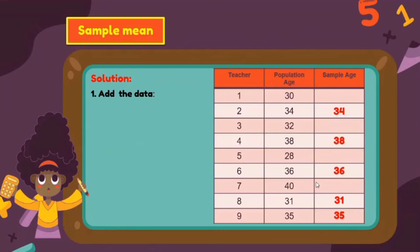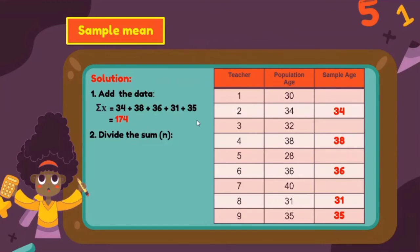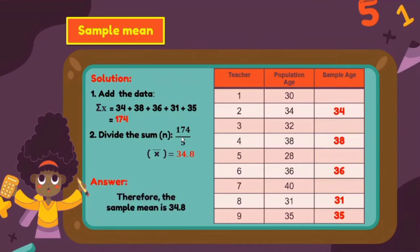To solve for the sample mean, add the sample data: 34 + 38 + 36 + 31 + 35 = 174. Then divide by n = 5: 174 ÷ 5 = 34.8. Therefore, the sample mean x̄ = 34.8.